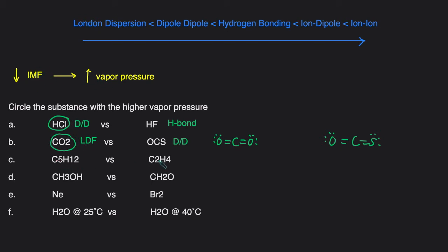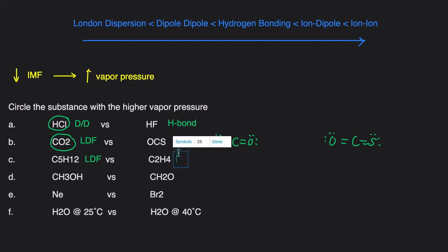Next: C5H12 versus C2H4. Both of these are hydrocarbons, meaning compounds containing only carbon and hydrogen. Hydrocarbons are nonpolar, so they'll both only have London dispersion forces. The strength of London dispersion forces is affected by the number of electrons or the size of the molecule — larger molecules with more electrons will have stronger London dispersion forces. Since C2H4 is smaller than C5H12 with fewer atoms and fewer electrons, it will have weaker London dispersion forces and therefore a higher vapor pressure.